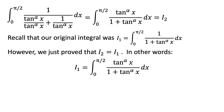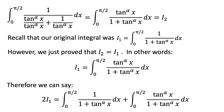We can recall that the original integral i1 is the integral from 0 to pi over 2 of 1 over 1 plus tangent of x to the alpha power. Therefore, we can combine these two integrals. So 2 times i1 is equal to the integral from 0 to pi over 2 of 1 over 1 plus the tangent of x raised to the alpha power, plus the integral from 0 to pi over 2 of the tangent of x raised to the alpha power over 1 plus the tangent of x raised to the alpha power.